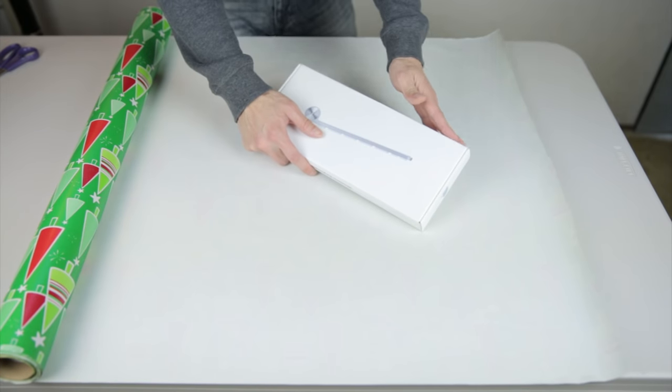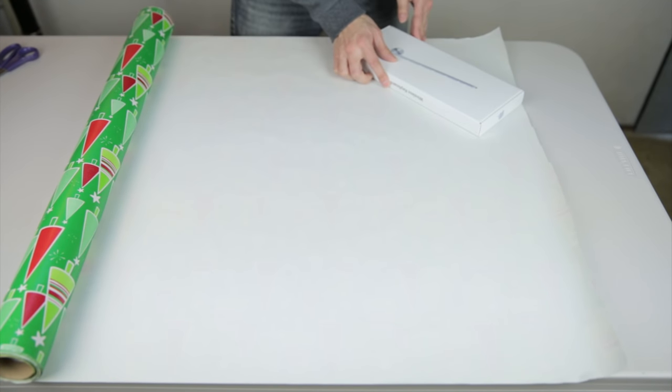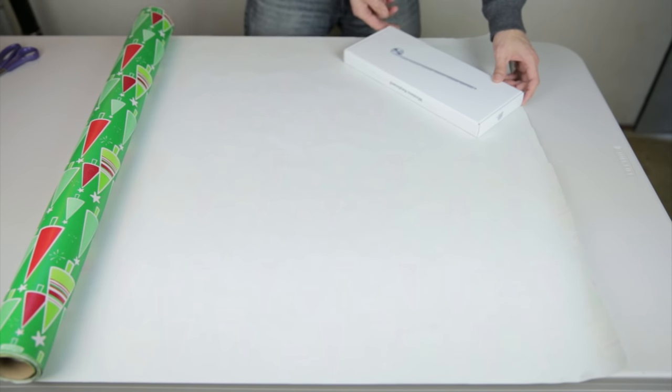First unroll your wrapping paper, then put the longest side of your gift at the corner of the wrapping paper so that each corner touches the edge.